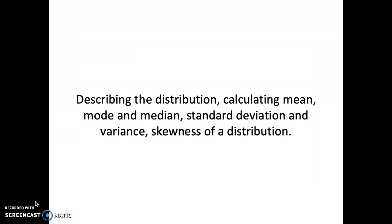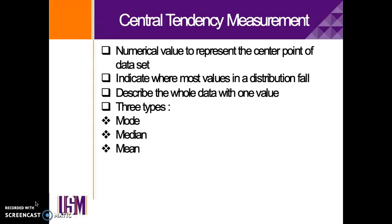The objective of our lecture today is for you to be able to describe the distribution, calculating the mean, mode, and median, standard deviation, variance, skewness, and also the distribution. In this video, I'm going to explain regarding central tendency measurement. Central tendency measurement refers to a numerical value that represents the center point of a data set. It indicates where most values in a distribution fall and describes the whole data with one value. There are three types of central tendency measurement: mode, median, and mean.